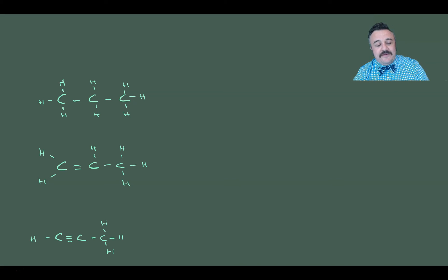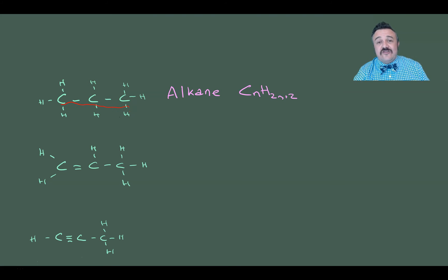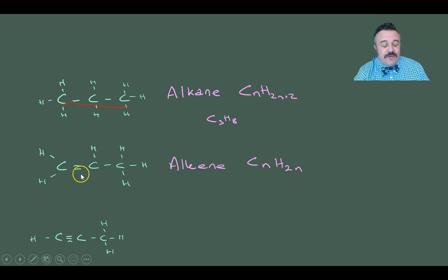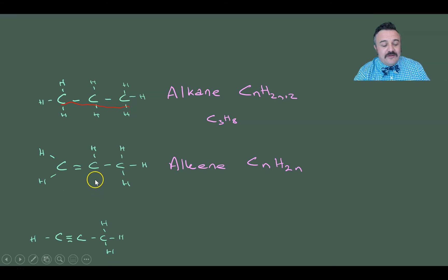Let's look at some examples. First, we have three carbons along the middle, so n = 3. Since there are only single bonds, this is an alkane: CₙH₂ₙ₊₂ gives us C₃H₈ — and if we count the hydrogens, that checks out. Next to it we have an alkene — we can see the double bond in the structural formula. With n = 3, CₙH₂ₙ gives C₃H₆. We count six hydrogens, and we can see that the double-bonded carbons each have four bonds around them.